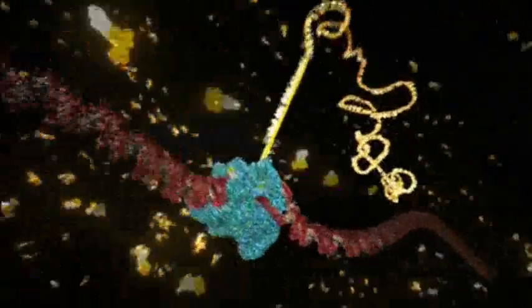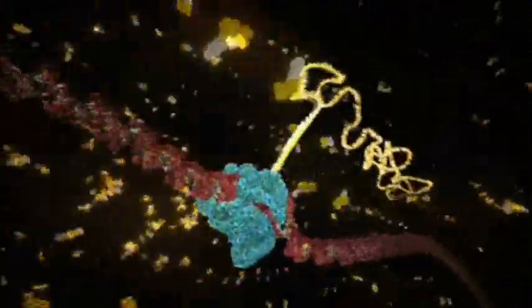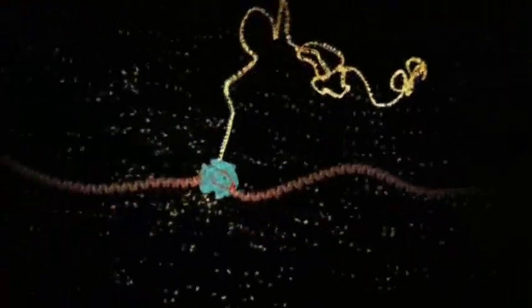The yellow chain snaking out of the top is a copy of the genetic message. And it's made of a close chemical cousin of DNA, called RNA.